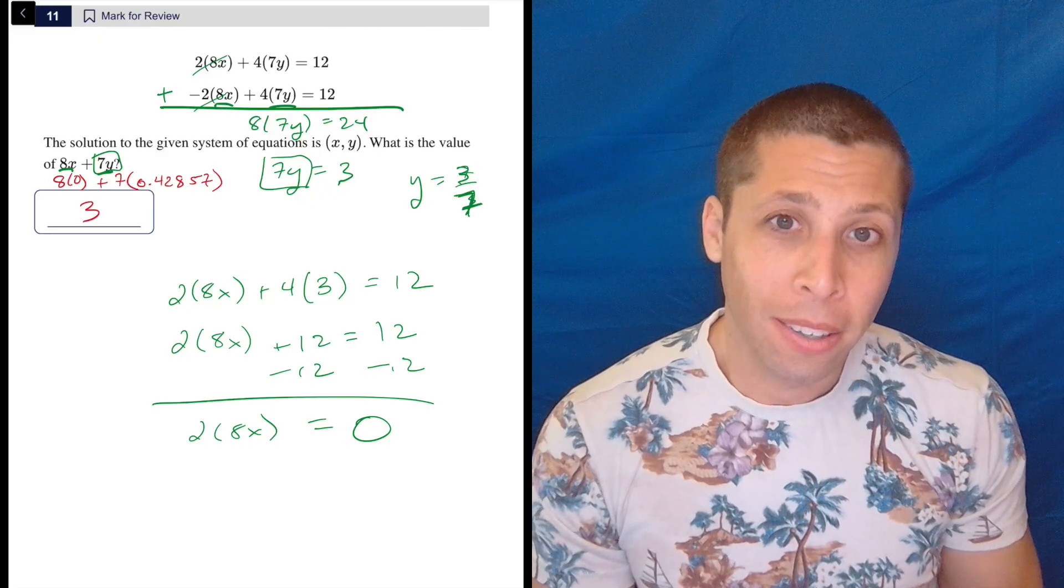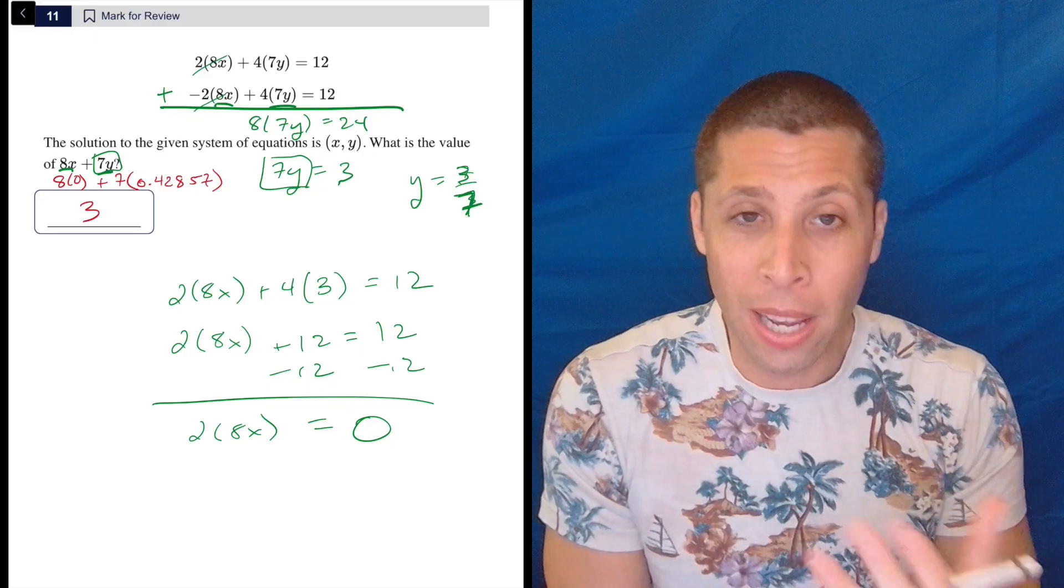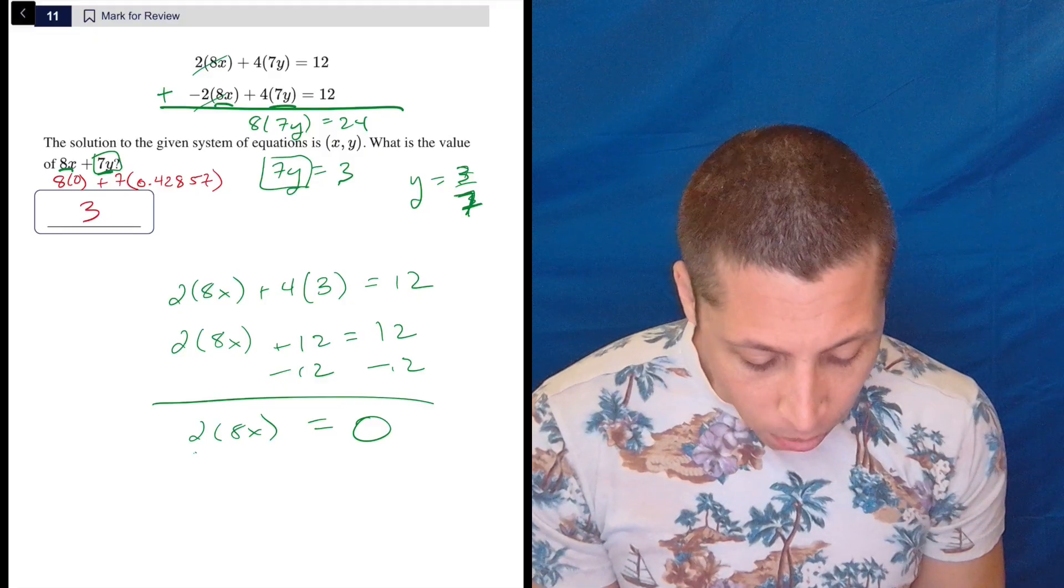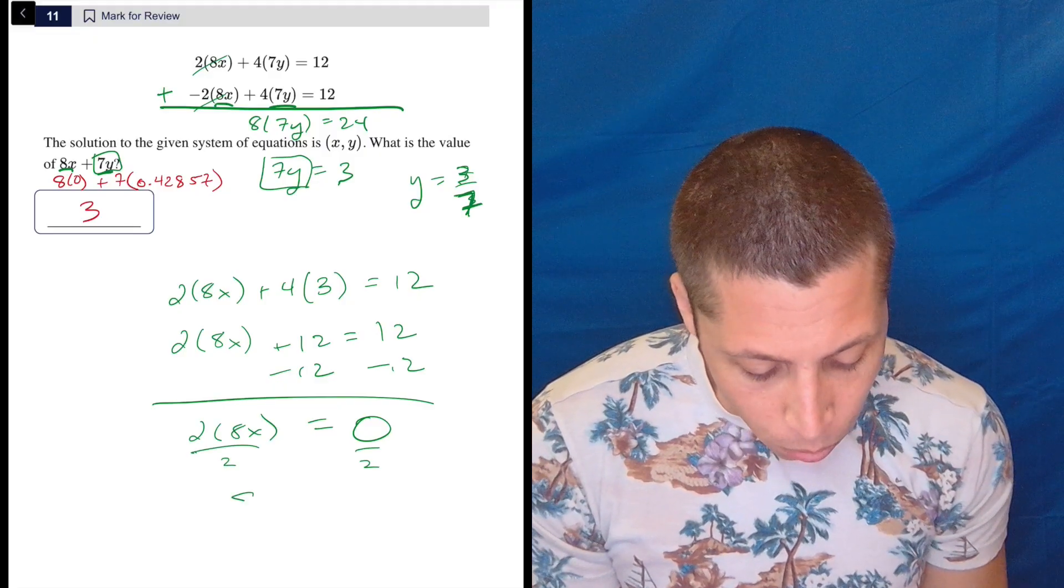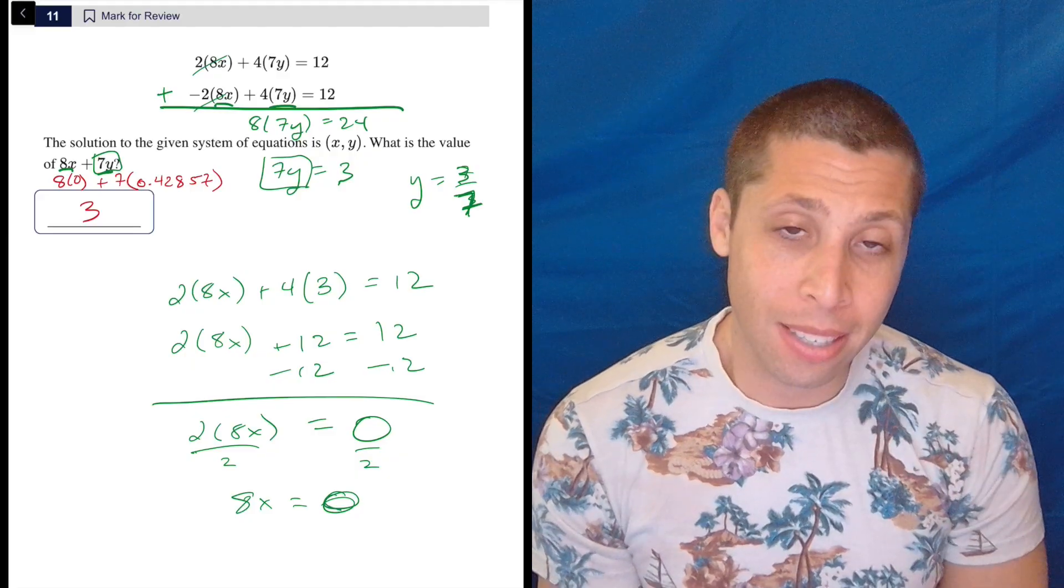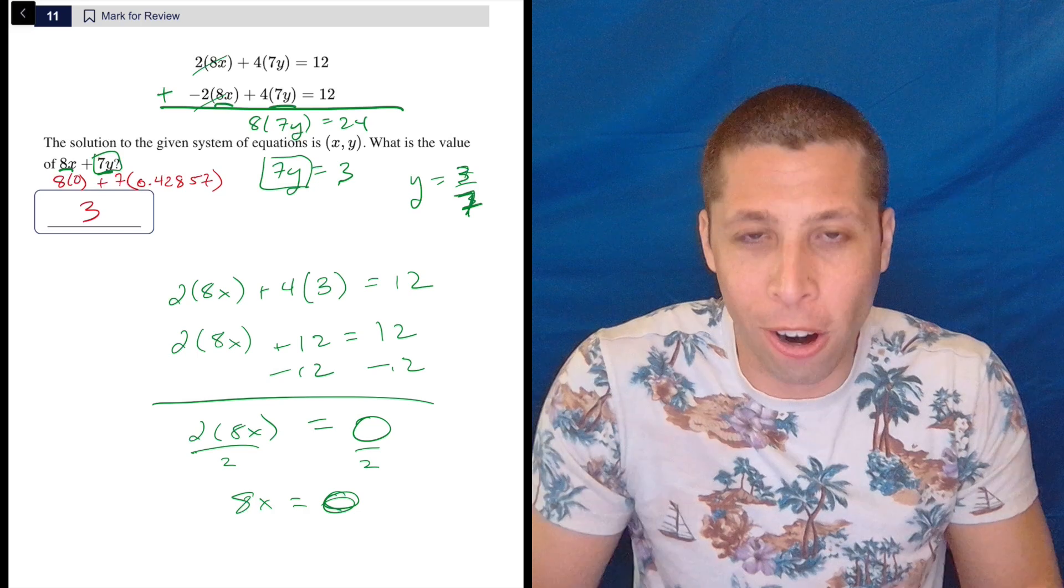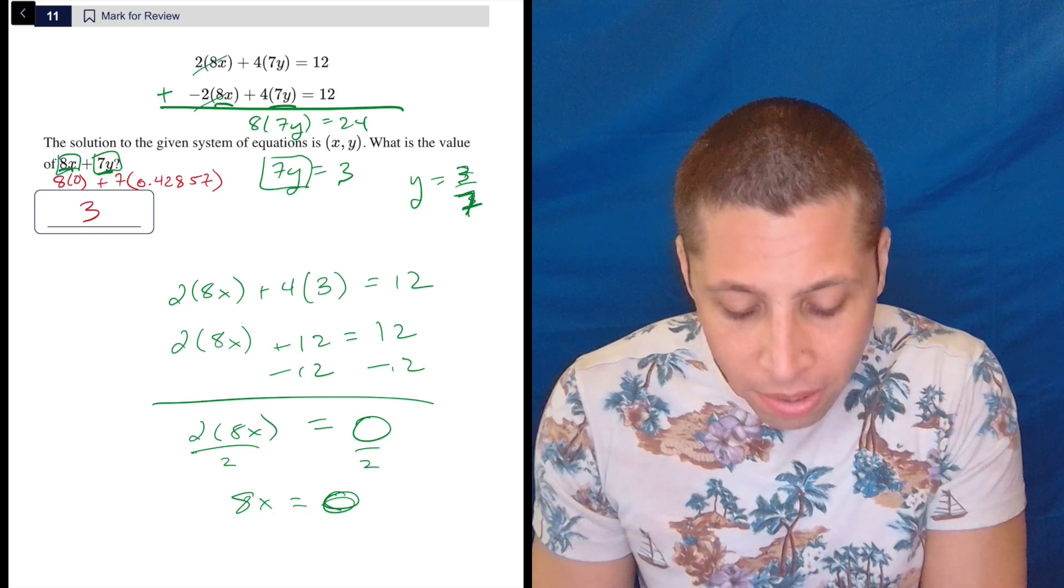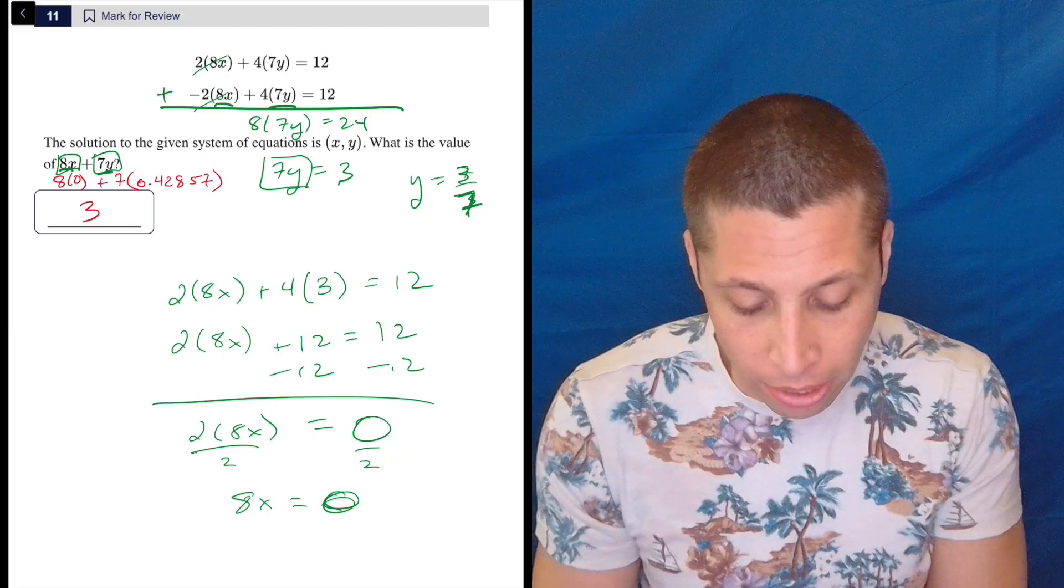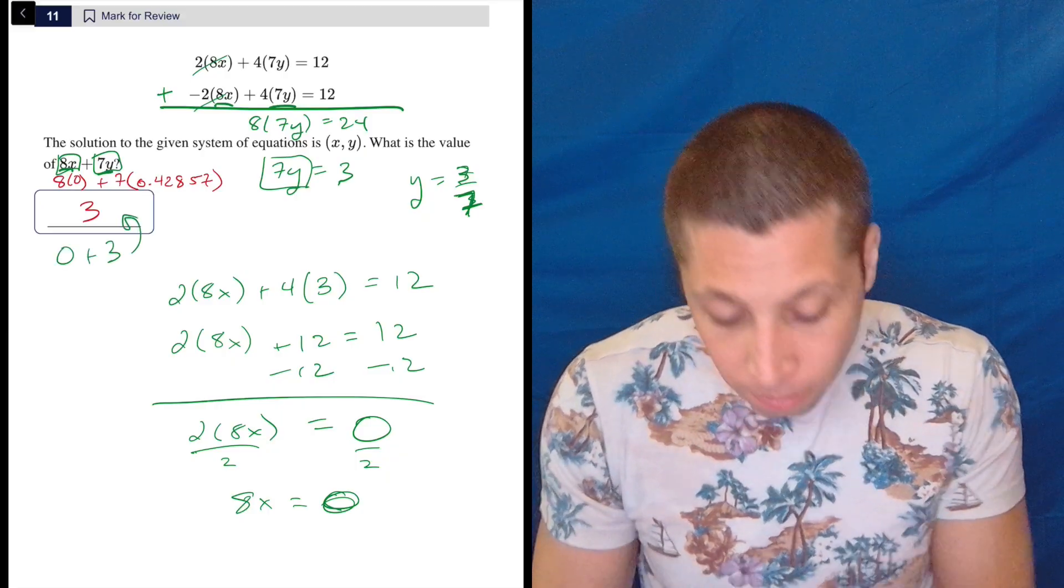Guys, 0 is a number. It's a number, just like 2, just like negative 7. They're all numbers. It doesn't matter. So 0 is a number that you can get. And so basically, at this point, what I would do is I would divide by the 2. We can see that that's not going to make a difference. We still get that 8x is 0. And again, I could solve for x and get x is 0 by itself. It's not that hard. But remember, what we wanted was the 8x as a unit. So keep it as a unit. So there you go. 8x is 0 plus 7y is 3. So we get 3 again.